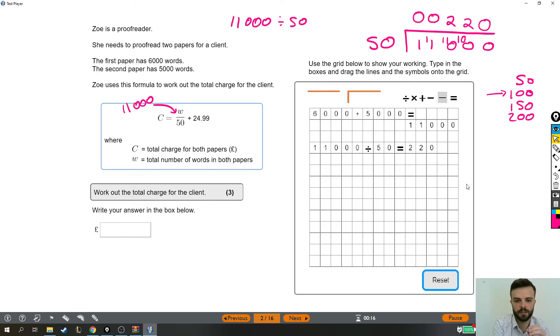Great. So we've worked out what this part of the formula is over here. That came to 220. But the formula tells us to take that and add 24.99. So what I'm going to do is column addition. That's okay. A little warning for our time. I'm going to do column addition.